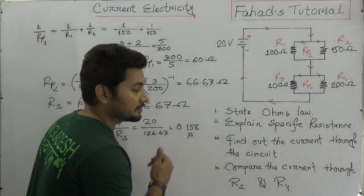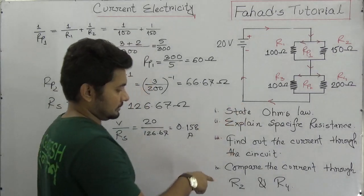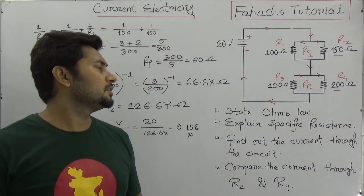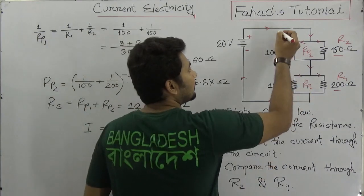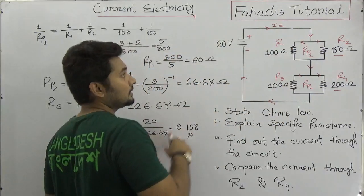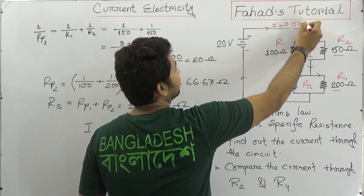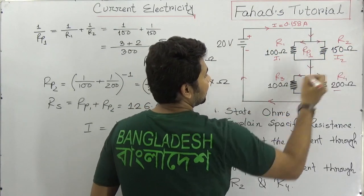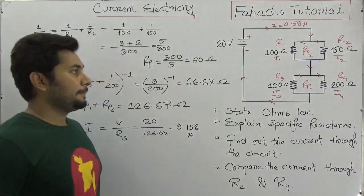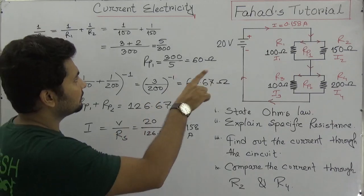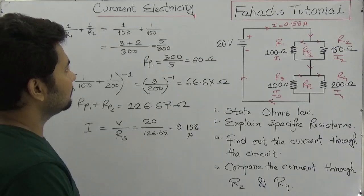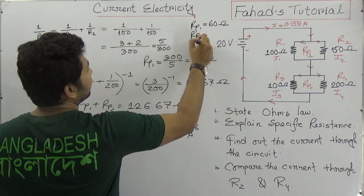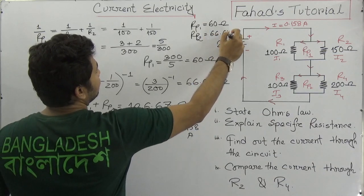The last question asks us to compare the current through R2 and R4. We need to find I2 and I4. The total current of 0.158 A enters the circuit and then divides into two parts: I1 and I2 through the first parallel group (Rp1 = 60 ohm), and I3 and I4 through the second parallel group (Rp2 = 66.67 ohm).